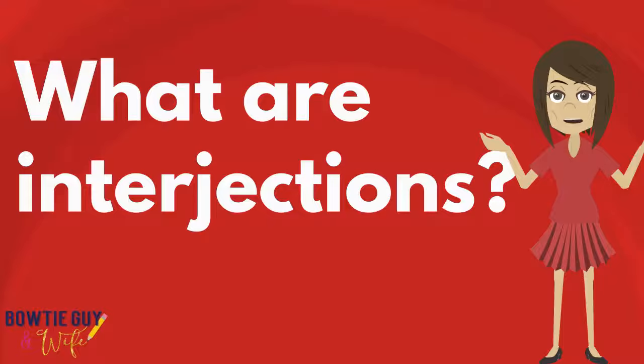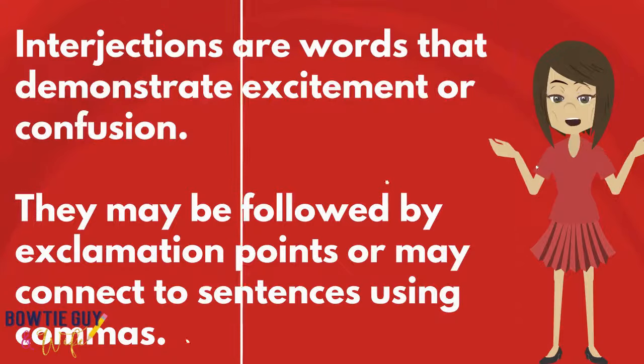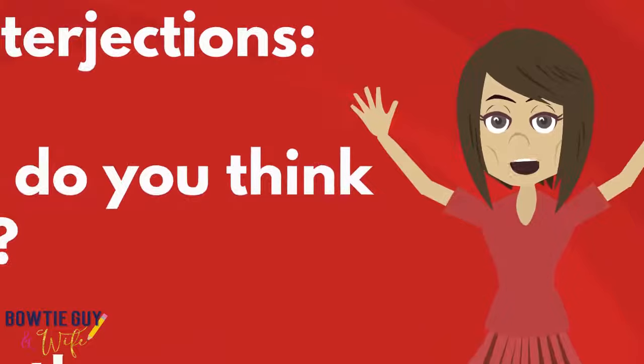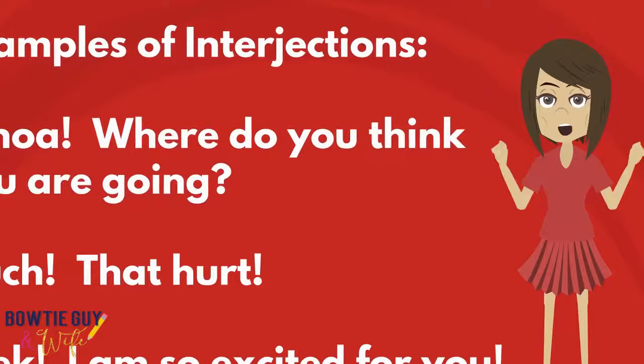What are interjections? Interjections are words that demonstrate excitement or confusion. They may be followed by exclamation points, or may be connected to sentences using commas. Whoa, where do you think you're going? Ouch, that hurt. Eek, I'm so excited for you.